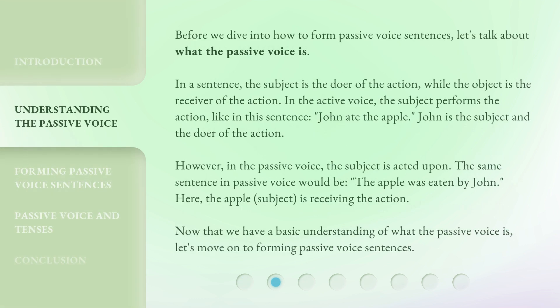Before we dive into how to form passive voice sentences, let's talk about what the passive voice is. In a sentence, the subject is the doer of the action, while the object is the receiver of the action. In the active voice, the subject performs the action — like in this sentence: 'John ate the apple.' John is the subject and the doer of the action. However, in the passive voice, the subject is acted upon. The same sentence in passive voice would be: 'The apple was eaten by John.' Here, 'the apple' (subject) is receiving the action.